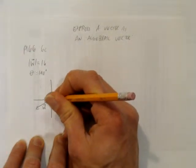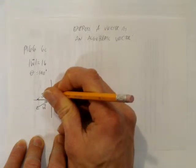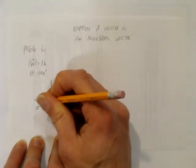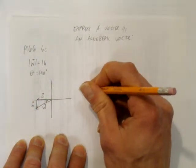There's going to be a component horizontally, component a vector, and a component vertically. And that component will be the b vector. So we've got this triangle.